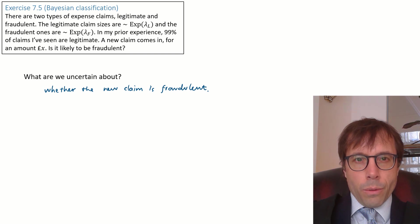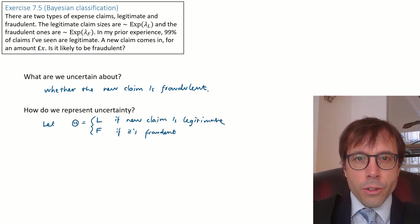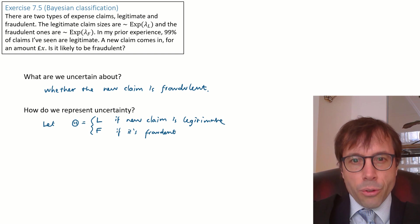This question asks us, is the claim for x likely to be fraudulent? So that's what we're uncertain about, whether or not the claim is fraudulent. So next question, how do we represent our uncertainty? The Bayesian answer is always, we represent uncertainty by means of a random variable. Let's invent a random variable, capital theta, whose possible values represent the possible resolutions of our uncertainty. Let's say theta takes value either l or f. It takes value l if the claim is legitimate, f if it's fraudulent.